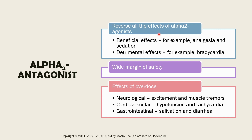An interesting note about the alpha-2 antagonist is that they have a wide margin of safety. In terms of overdose effects, animals can become excited and develop muscle tremors. For cardiovascular effects, the animal can get hypotension and tachycardia. In the gastrointestinal tract, there is salivation and diarrhea — because you are reversing the effects of your alpha-2 agonist.